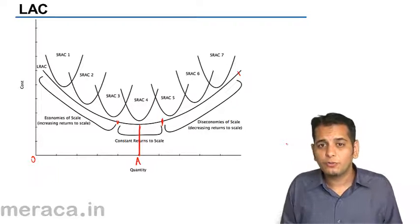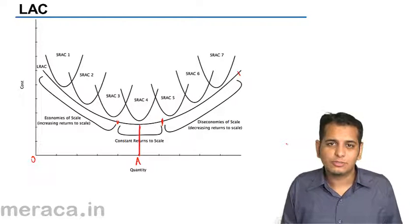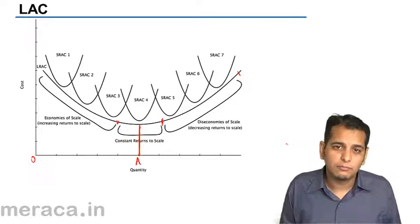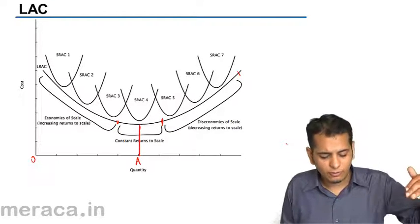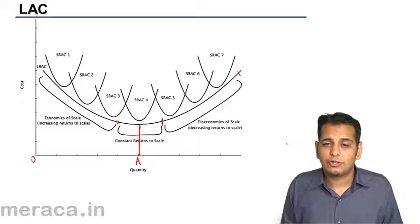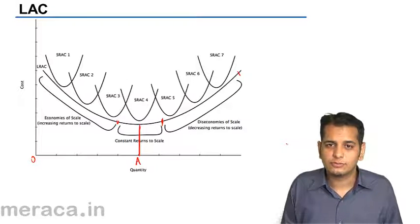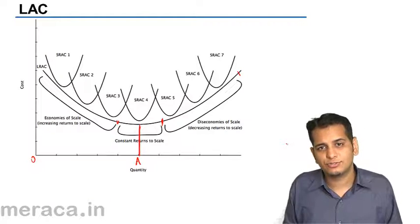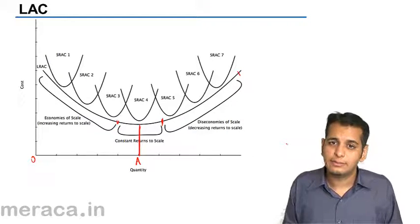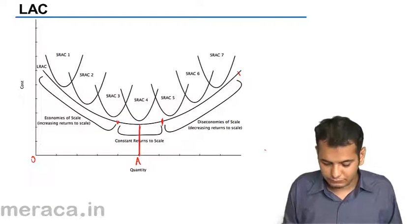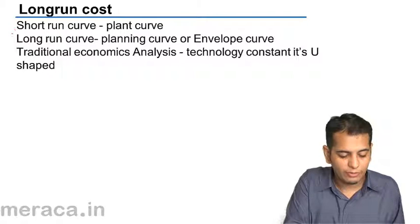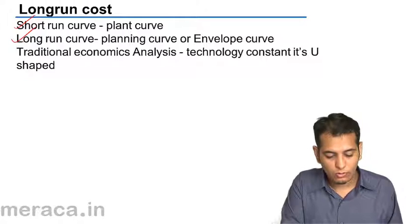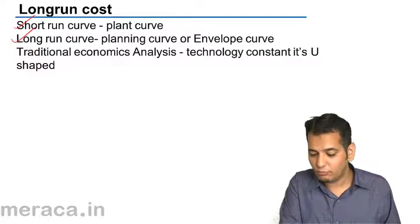This is how the long run average cost curve helps the firm to plan its expansion process. Just a point to note: the long run average cost curve is also called the envelope curve, because it envelops — it covers — all the short run average cost curves. The short run curve is called the planned curve; the long run curve is called the planning curve or the envelope curve.